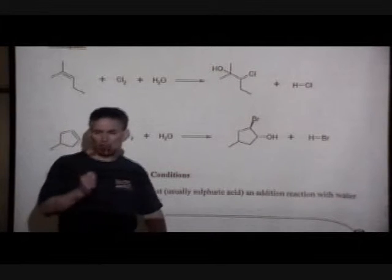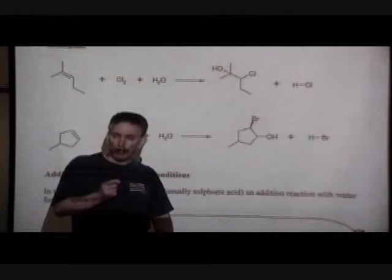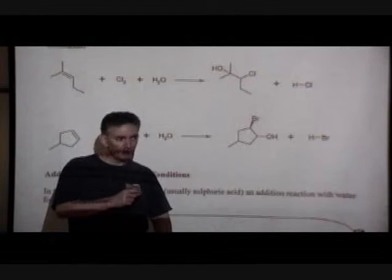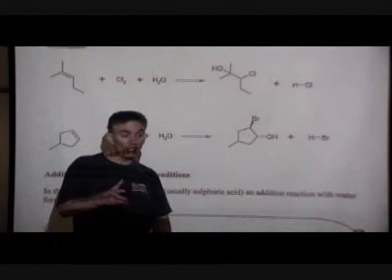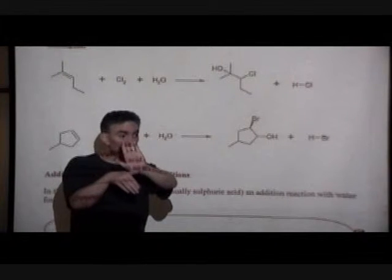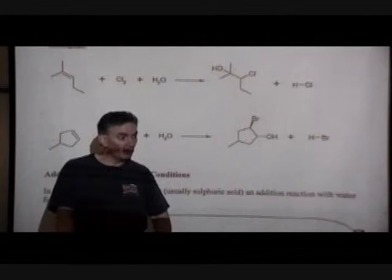We said the reaction is regiospecific or regioselective because the bromine always adds to the carbon which has more hydrogen. We said that it's stereoselective because the spatial orientation of the product, if it's a cycle, is that trans configuration. The halogen and the alcohol group on opposite sides of the ring.